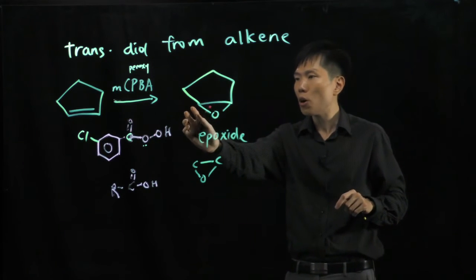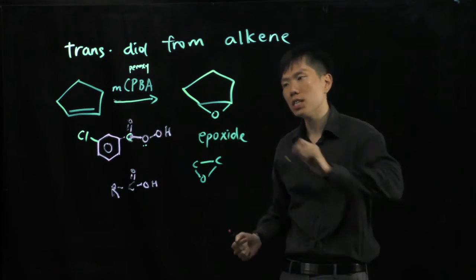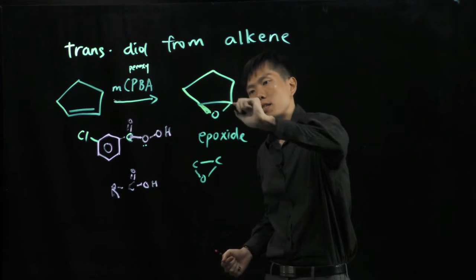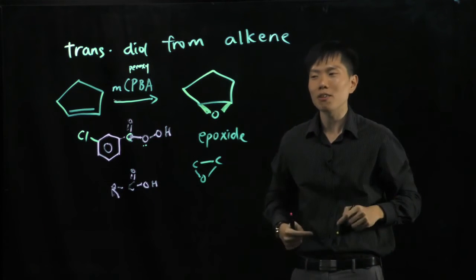Take note that because of the small ring here and the close proximity of the carbon, carbon and the oxygen, these two bonds must go to the same side, either facing up or facing down.